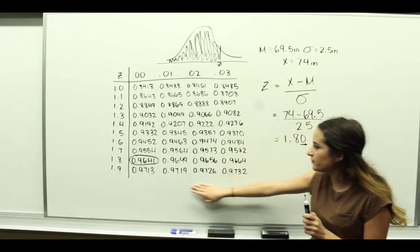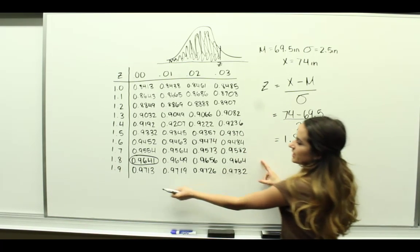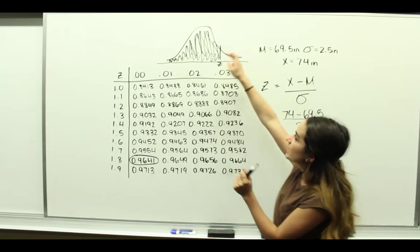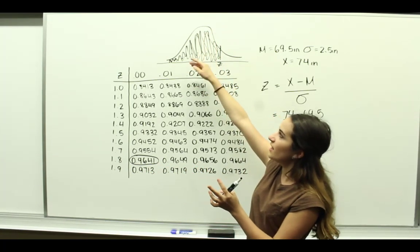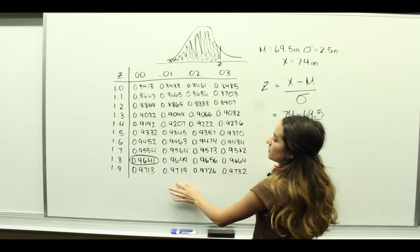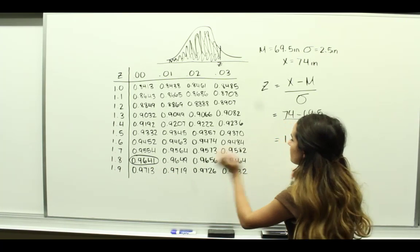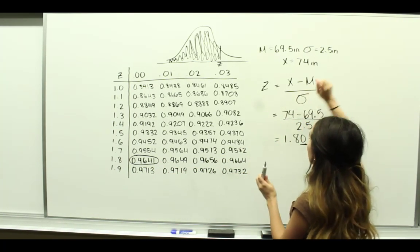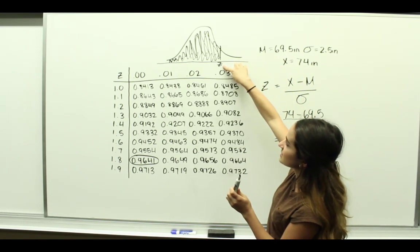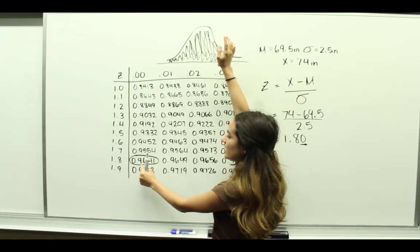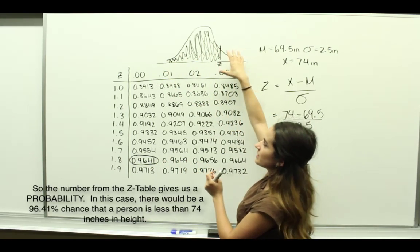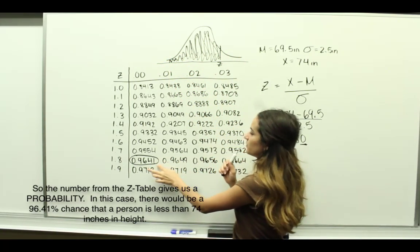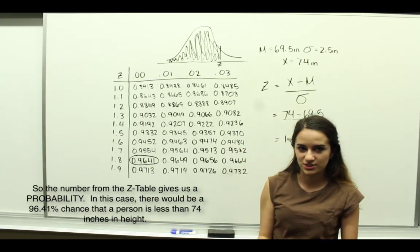On the Z-table, all of the values within represent probabilities, and in this case this value is this area of the normal distribution. So the probability that someone will have a height less than 74 inches would be 0.9641, which would be a 96% chance that someone would have a height less than 74 inches.